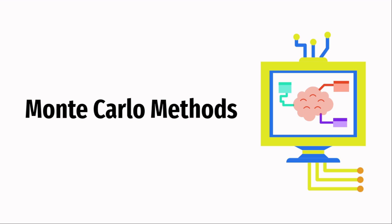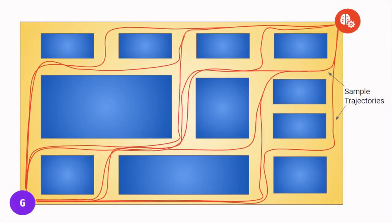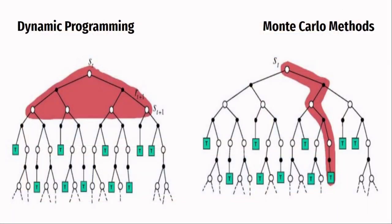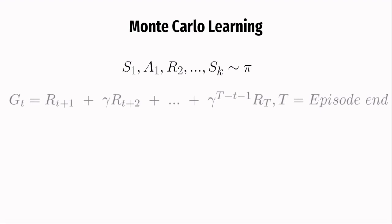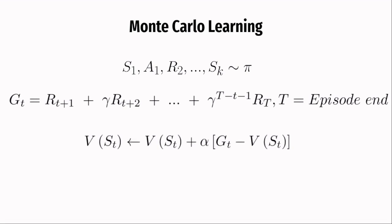Monte Carlo methods do not assume complete knowledge of the environment. They require only experienced samples of trajectories from actual interaction with the environment. While dynamic programming is powerful because it considers all possibilities of next states the agent might land in, Monte Carlo methods sample actual trajectories from the environment and incrementally learn from that. After sampling a trajectory, Monte Carlo methods calculate the returns for every step, and instead of calculating expected returns, the values are calculated using sample returns. This is called Monte Carlo policy evaluation.